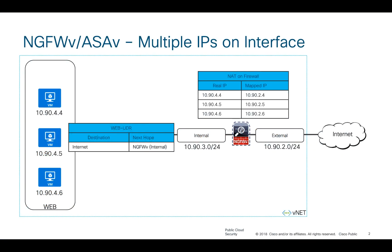Let's take an example where I have a firewall at the edge and multiple web servers in my backend subnet. If this environment is your on-premise data center, you can simply enable a NAT statement, and your firewall will do a proxy ARP for that additional IP address. Now in public cloud this option is not available. When you create a firewall, each interface will have its own dedicated private IP address, which is mapped on Azure NAT gateway.